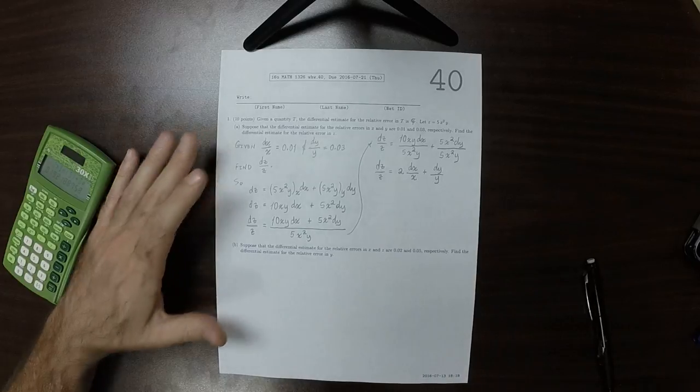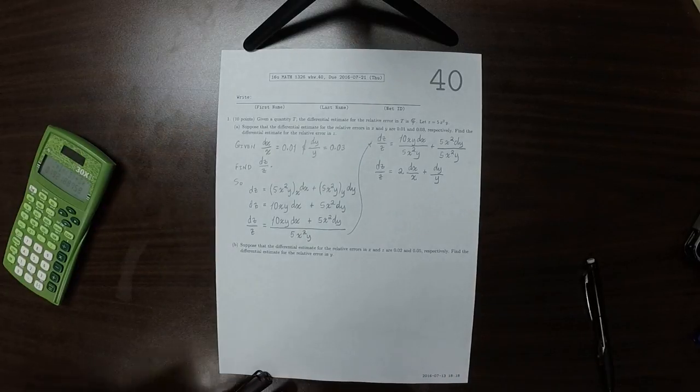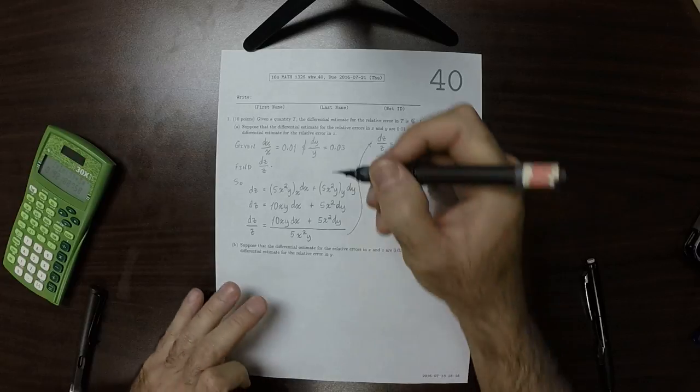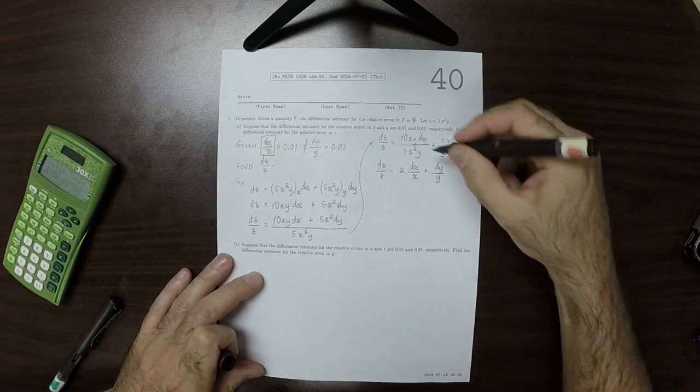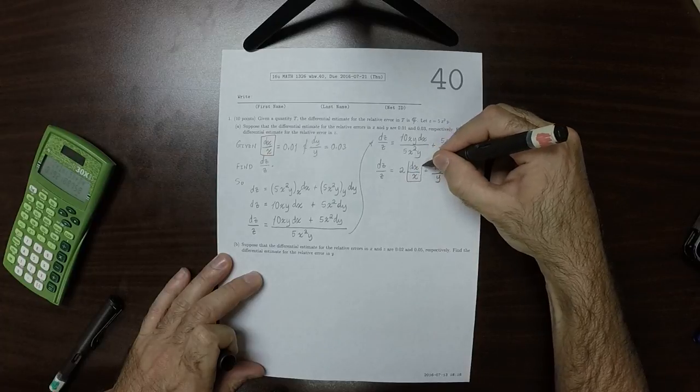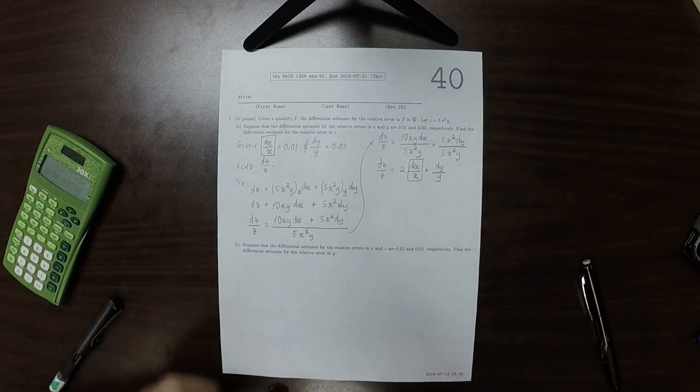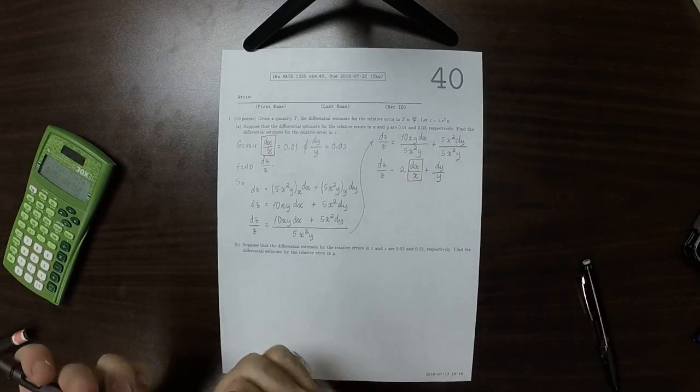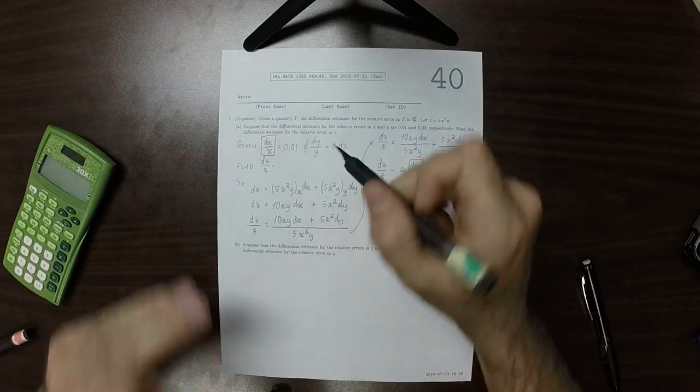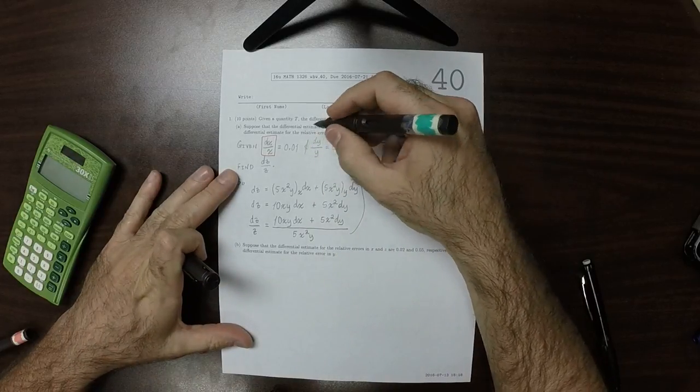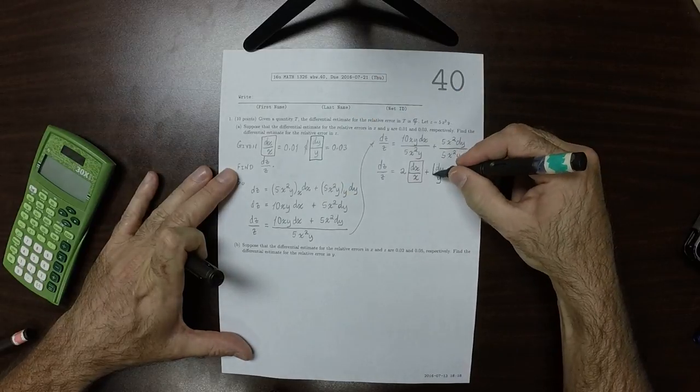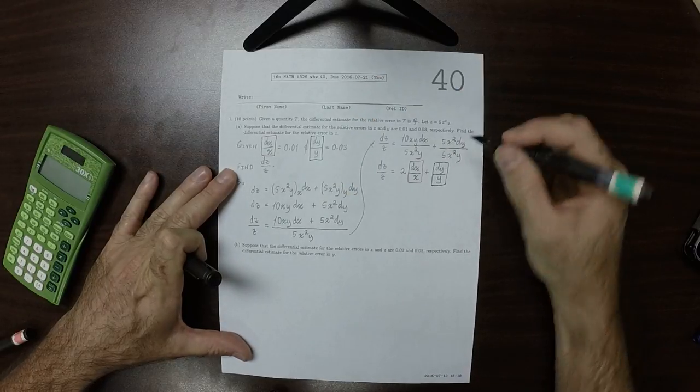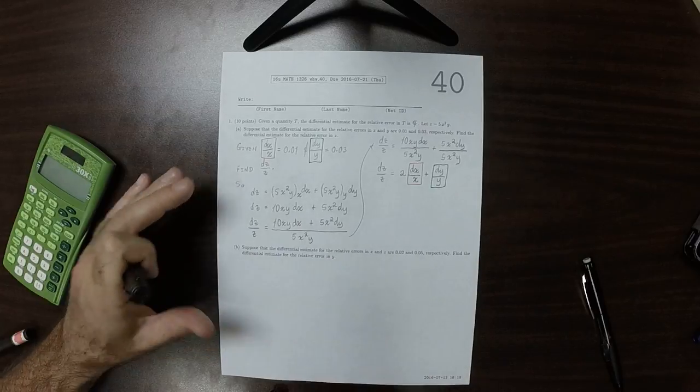So what we're given: we're given dx over x, and here's dx over x. We're given dy over y. Here's dy over y. And we're asked to find dz over z.